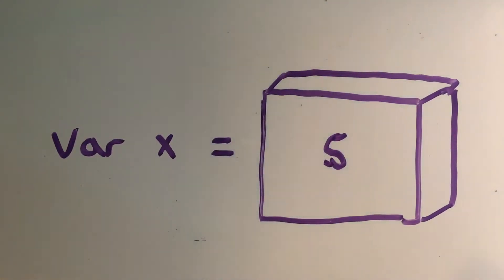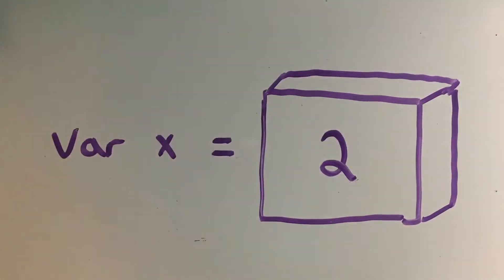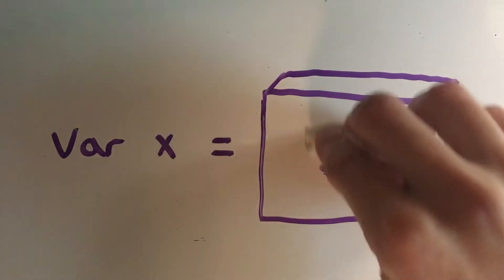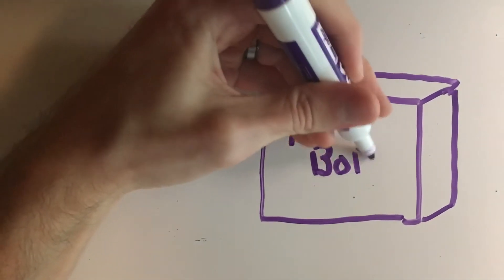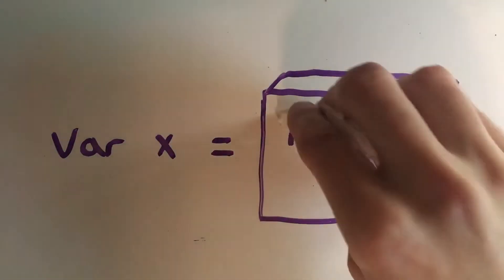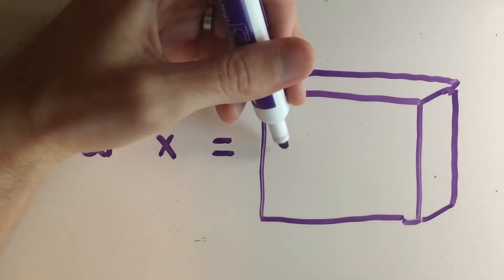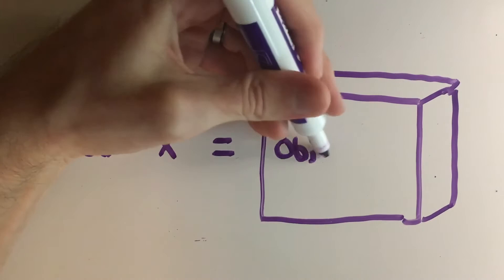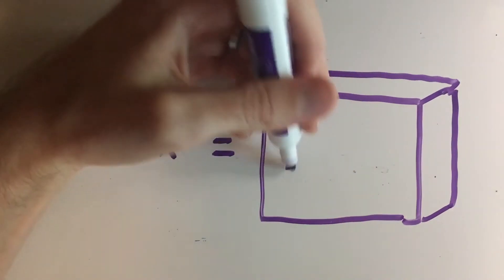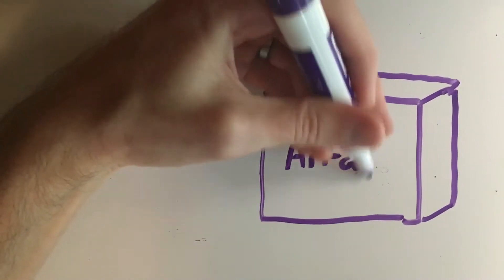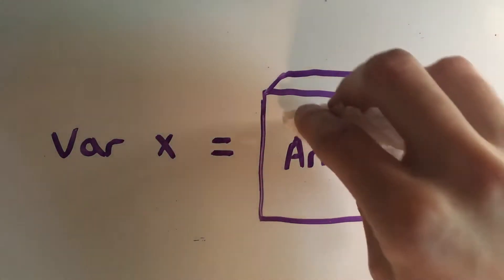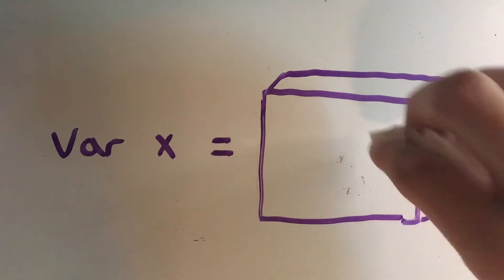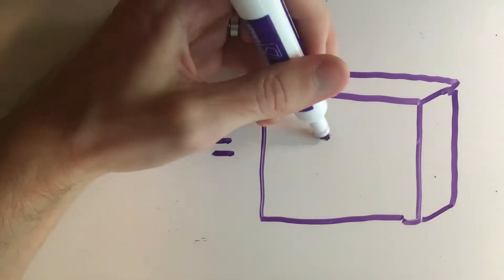There are other primitives such as booleans, strings, and others that you'll see here, but just note that a variable can only hold a value to one thing at a time — for instance, the string 'Bob', or the number 2 or 5. Variables can also hold a reference to an object or to an array. The main takeaway is that a variable can always only point to a single primitive, object, or array at a time.